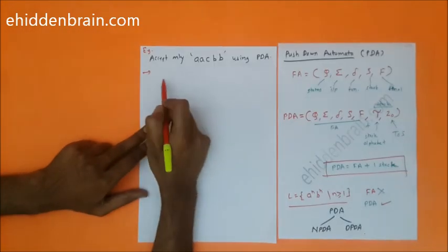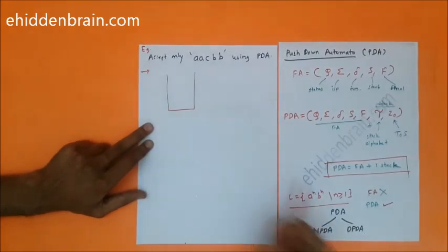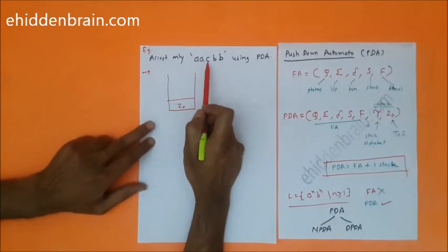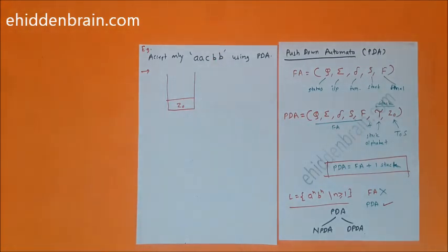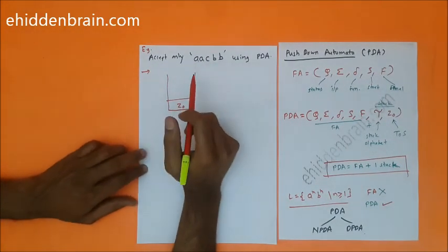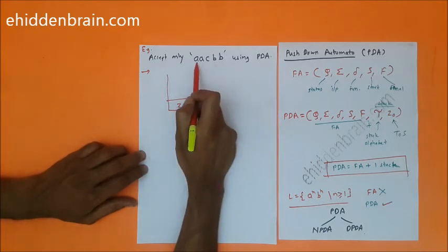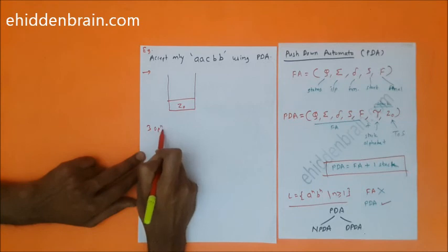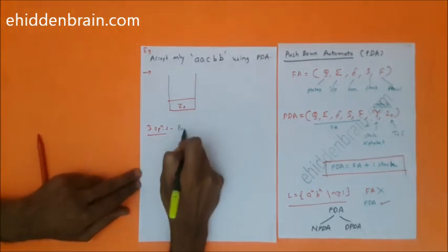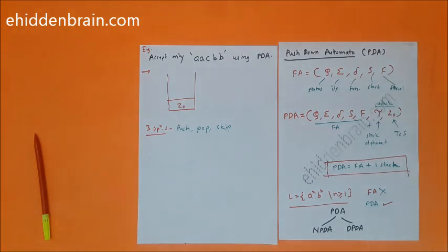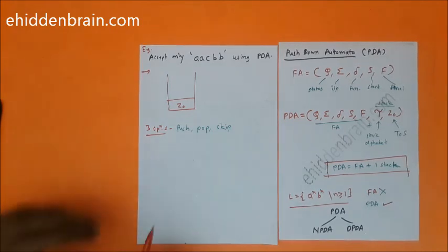The algorithm uses a stack. Initially, z0 is the top of the stack. The logic is deciding when to push and when to pop. Three operations can be done on the stack: push, pop, and skip. Whenever I get 'a', I will push it; whenever I get 'c', I will skip it; and whenever I get 'b', I cross-check with the number of a's.